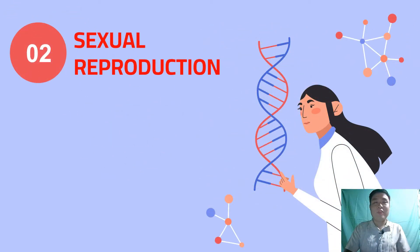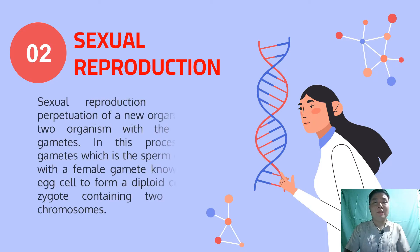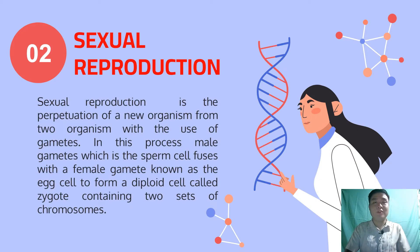The second type of reproduction is sexual reproduction. Sexual reproduction is the perpetuation of a new organism from two organisms with the use of gametes. In this process, male gametes, which are sperm cells, fuse with a female gamete known as the egg cell to form a diploid cell called a zygote containing two sets of chromosomes. During sexual reproduction, genetic material contained in chromosomes combines to produce genetically diverse offspring different from both parents. Humans, frogs, fish, cats, and dogs all reproduce through sexual reproduction.